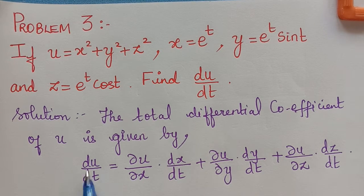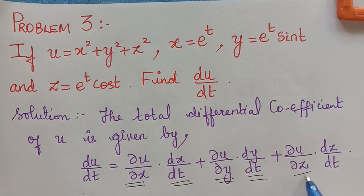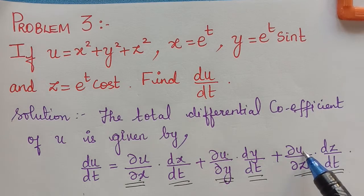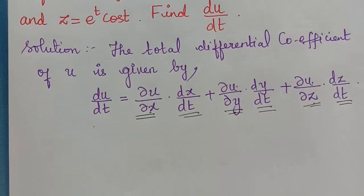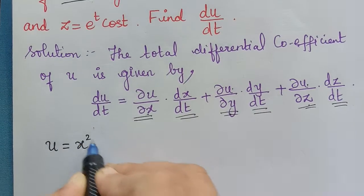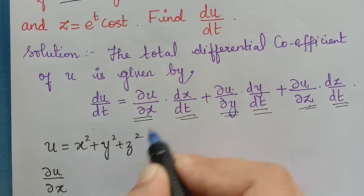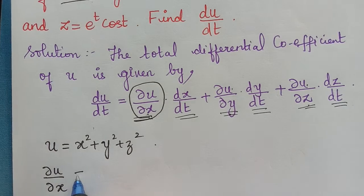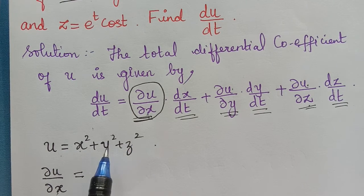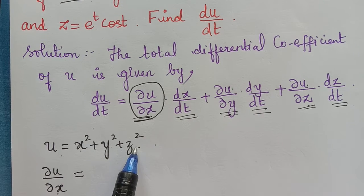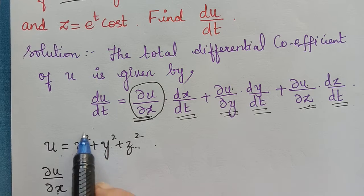I have written du/dt here. Now in this, we have to find each term and substitute in order to find du/dt. First of all, we shall find ∂u/∂x, ∂u/∂y and ∂u/∂z. For this, we should consider the given u. So u is x squared plus y squared plus z squared. We have to find ∂u/∂x first. We are finding ∂u/∂x, which will be equal to partially differentiating with respect to x.